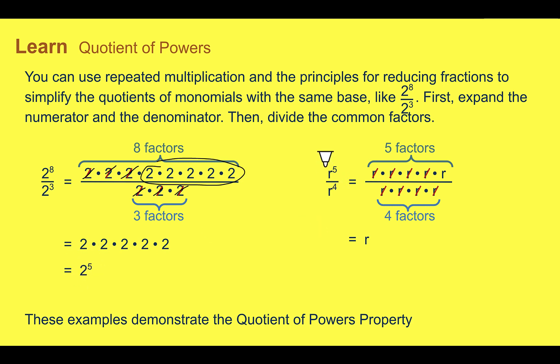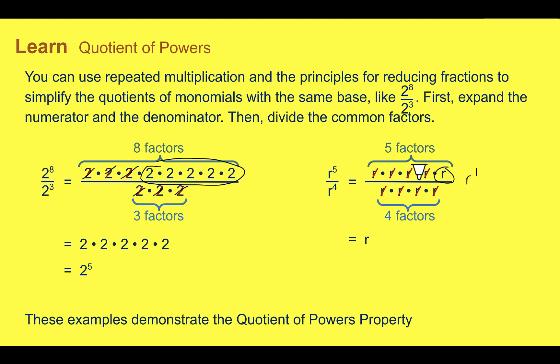We can do the same with variables. We'd have r to the 5th divided by r to the 4th. We can cancel out 4 of them from each. We're left with just 1 on the top, which is r to the 1st power, so just r.